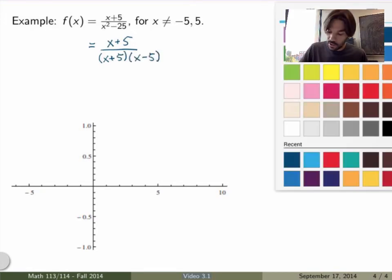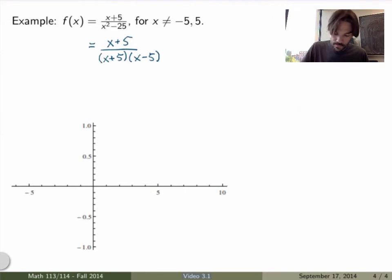And now, because I'm assuming that x is not equal to minus 5 or 5, I can actually cancel these two factors here. And I end up with the statement that this function is the same as the function 1 over (x-5).